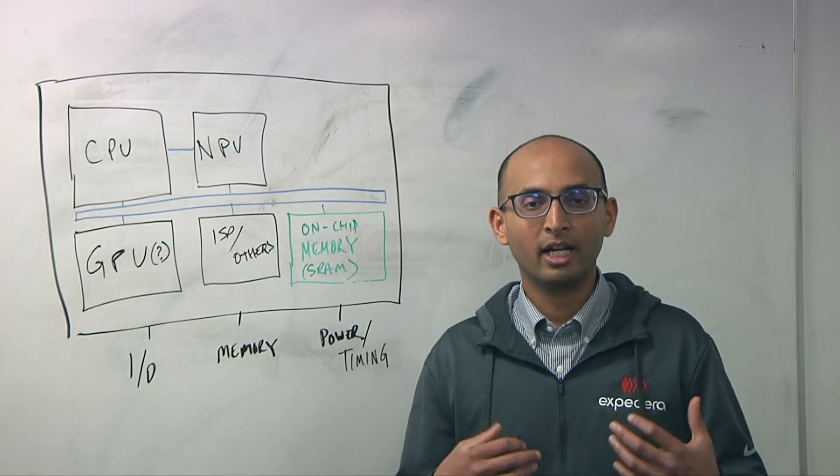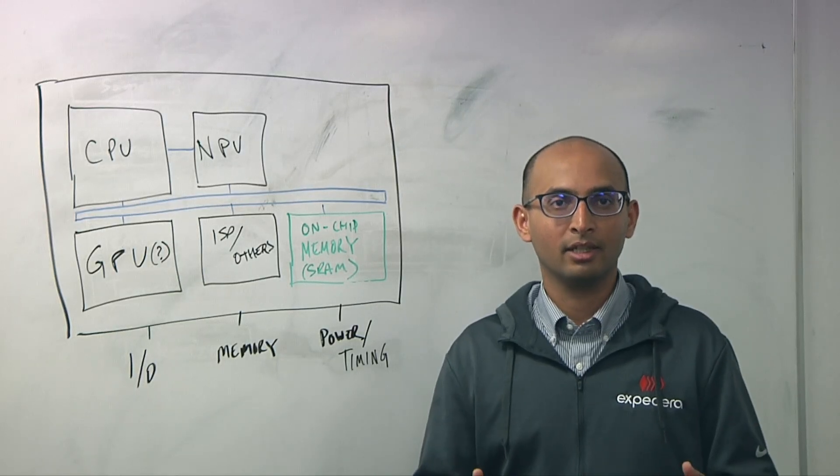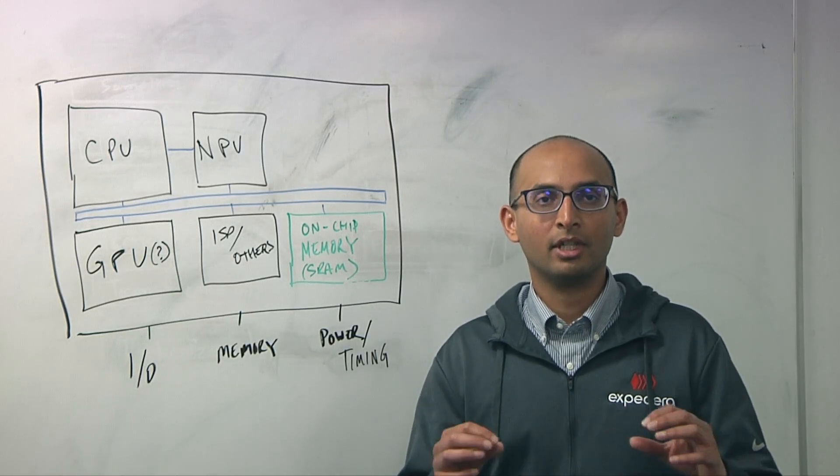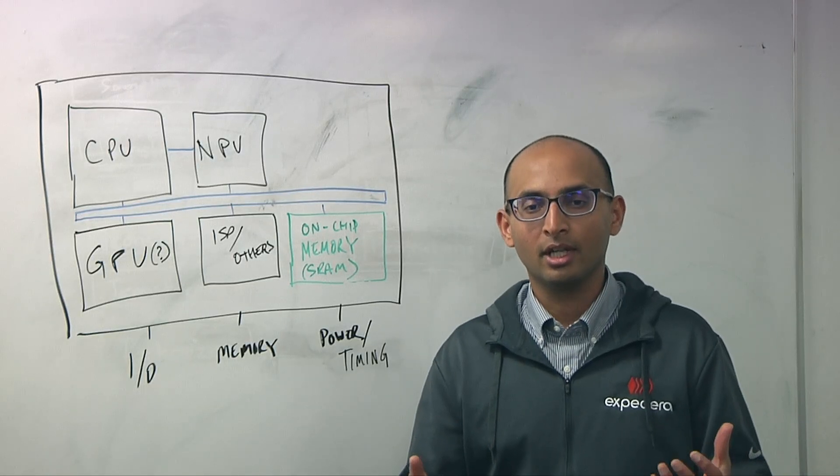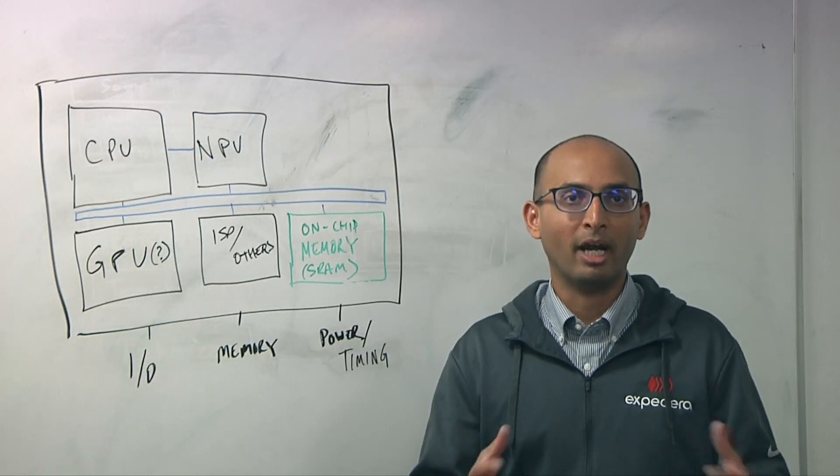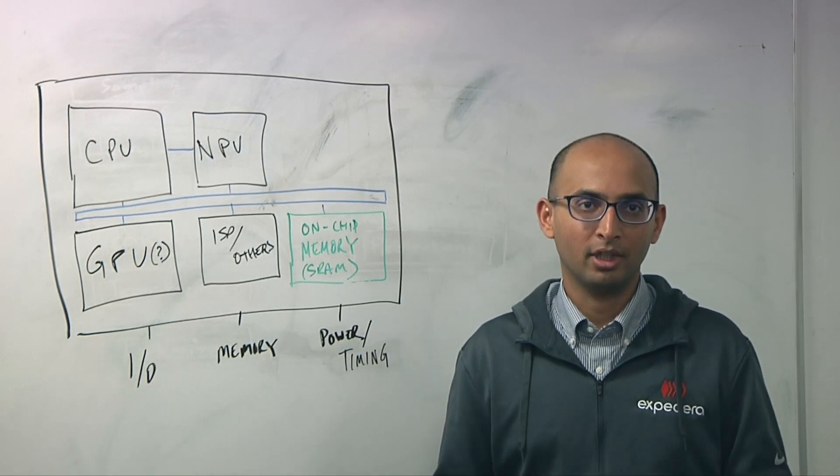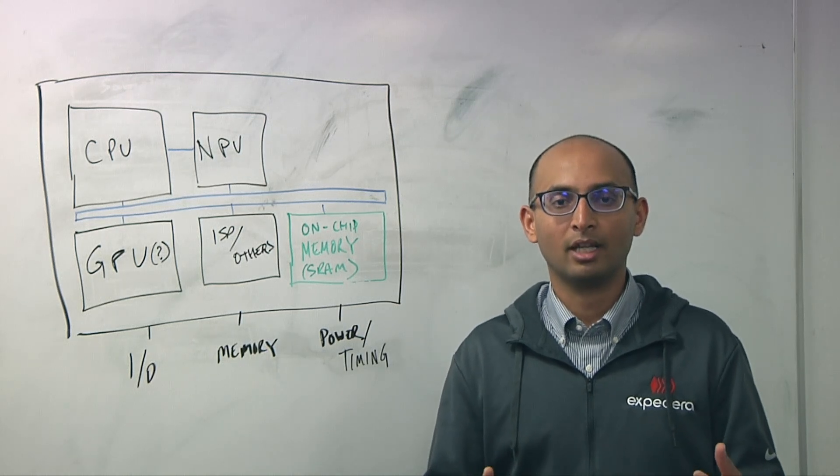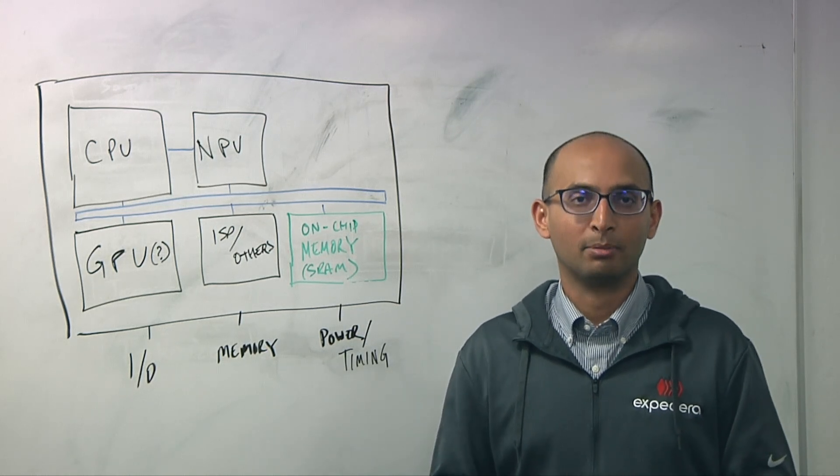So as we interact with new models, these models are actually converted into a representation called, we call it expert IR. It's our internal representation. And that representation underneath is used to compile the model into a binary. So the stack below that representation doesn't necessarily change. We don't really have to change that. But what we have to change is how does the incoming models are actually mapped into that expert IR.